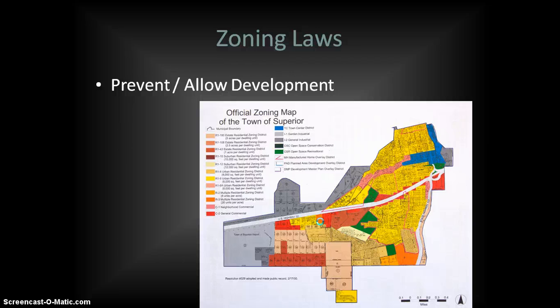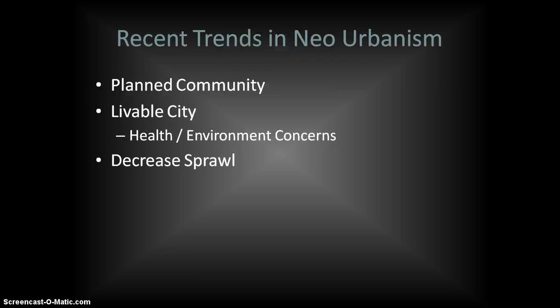Within zoning laws, you can also allow or prevent certain levels of housing density — whether single-family or multi-family housing. Sometimes communities use this to control the types of people who can move in, meaning income levels, since lower-income individuals are typically not homeowners and tend to live in multi-family housing like apartments or townhomes.